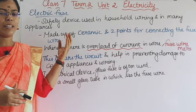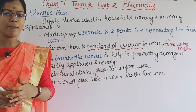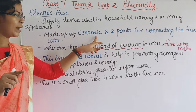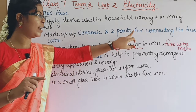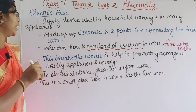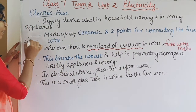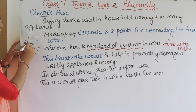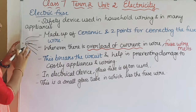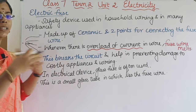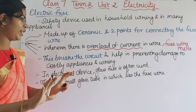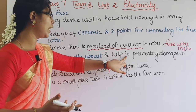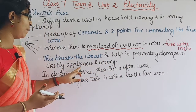Next is the electric fuse. The electric fuse is made of ceramic. There are two points for connecting the fuse wire. The electric fuse is connected with lights, fans, and other appliances. When there is an overload of current, the fuse wire will melt and break, which breaks the circuit. This helps in preventing damage to costly appliances and wiring.